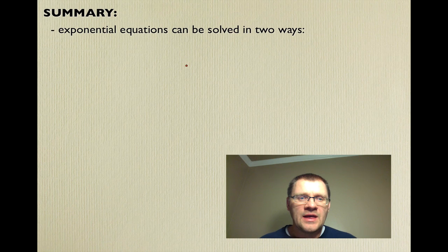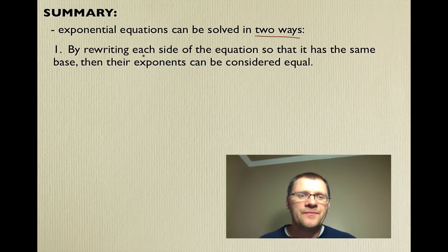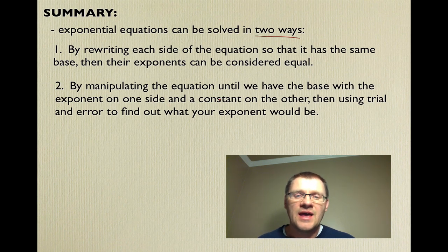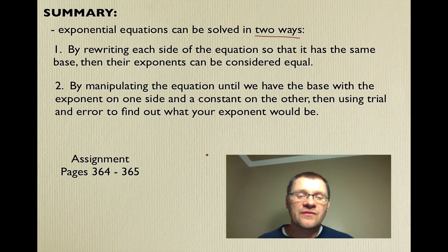So in summary, exponential equations can be solved in 2 different ways. Number 1, you could rewrite each side of the equation so it has the same base. Then you have to remember that their exponents can be considered equal. Or number 2, by manipulating the equation until we have the base with the exponent on one side and a constant number on the other. Then using trial and error to find out what your exponent would be.